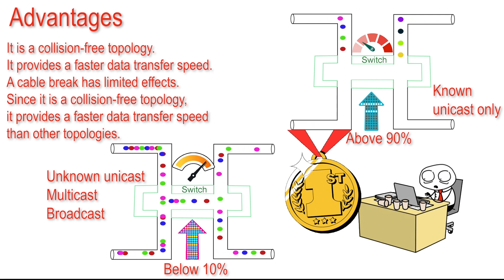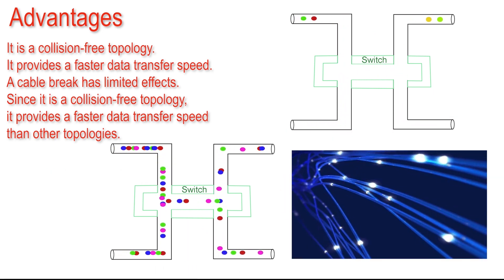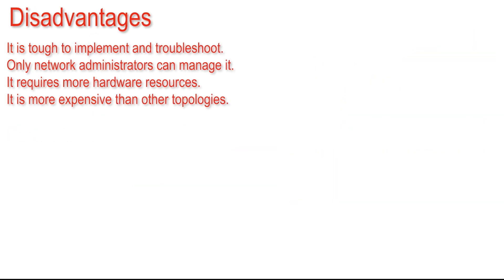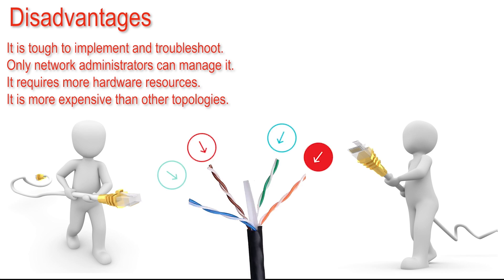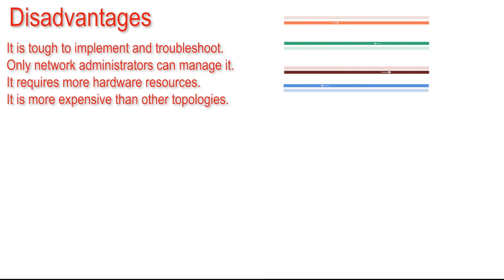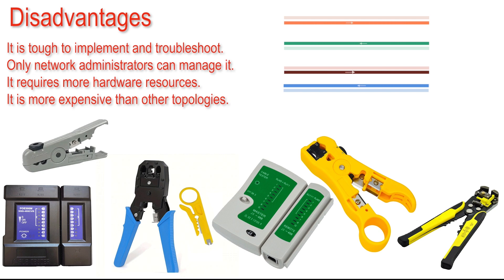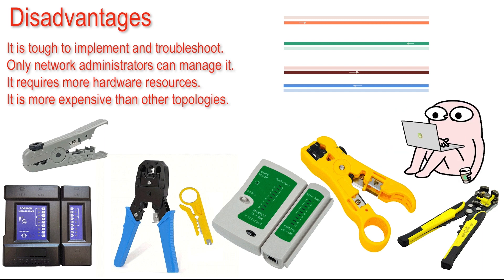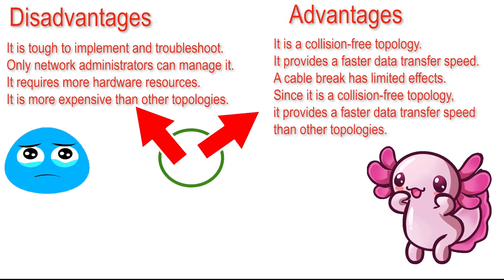Administrators choose it first when implementing a LAN network, as a collision-free environment allows nodes to utilize all available network bandwidth. On the negative side, it is hard to implement and debug. It uses twisted pair cables, which use eight color-coded copper wires — two for transmission, two for receiving, and four to reduce crosstalk and noise. You must understand each wire's functionality, and you need tools such as a wire crimper and tester, making this topology expensive and complex.